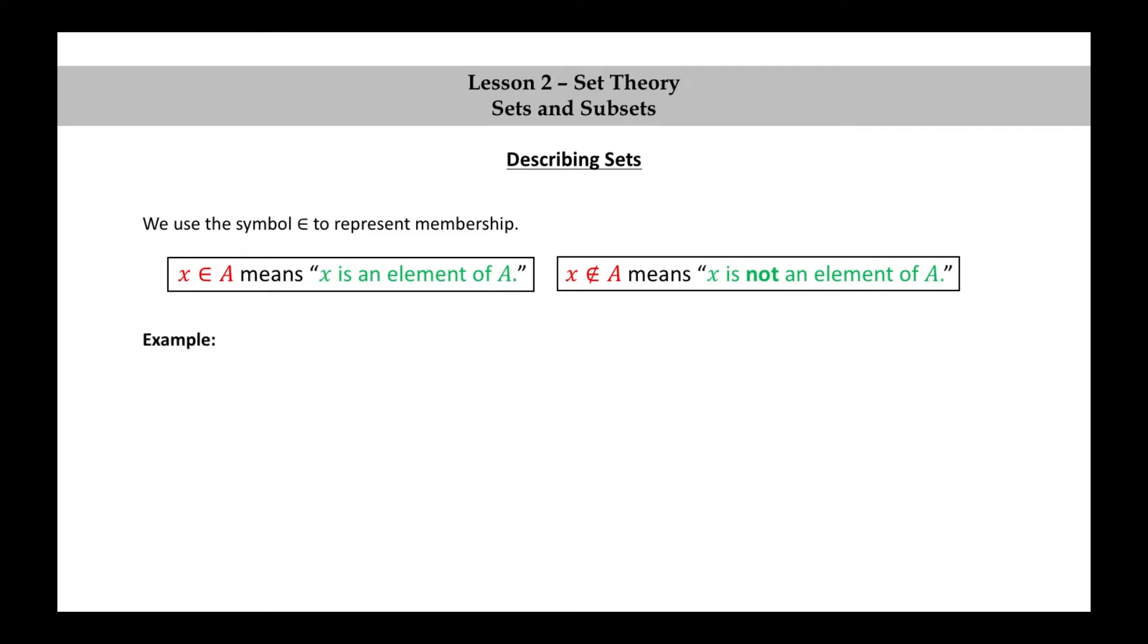Let's look at an example. A equals the set consisting of A, K, 3, dotted box, and crossed circle. Little a is an element of A. K is an element of A. 3 is an element of A. Dotted box is an element of A, and crossed circle is an element of A.